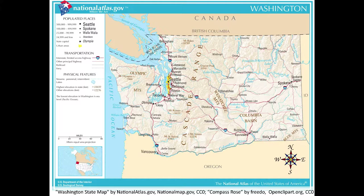This is a map of Washington State. You can see the key on the left. There are cities, highways, mountains, rivers, and an ocean.